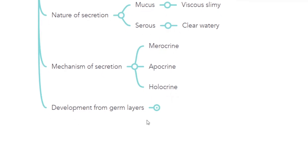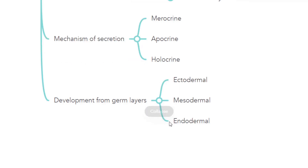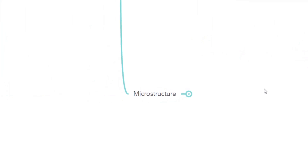Coming to the last classification — based on the developmental germ layer — it is classified as ectodermal gland, mesodermal gland, and endodermal gland. As the names suggest, the ectodermal gland develops from the ectoderm, the mesodermal gland develops from the mesoderm, and the endodermal gland develops from the endoderm. That covers the general structure of the epithelial glands.